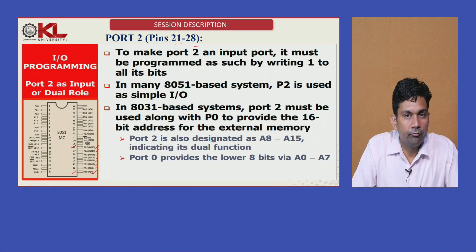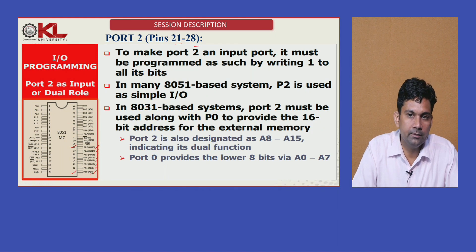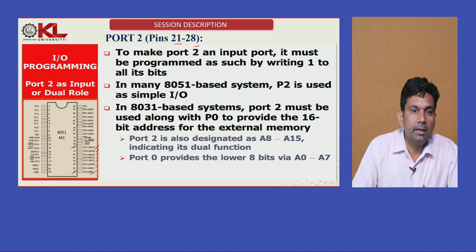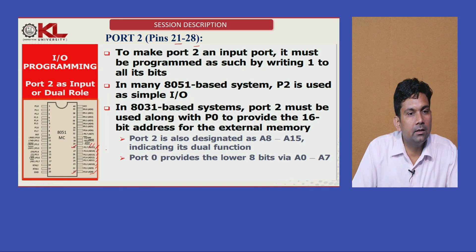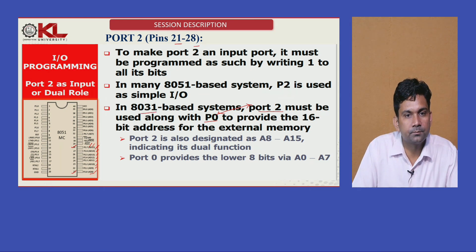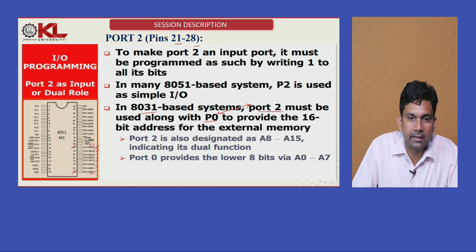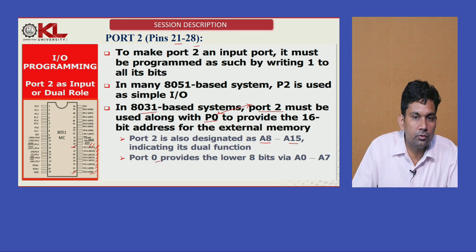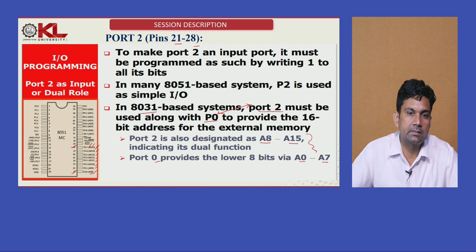If we want Port 2 to act as an input port, we must write 1 to all the pins. Port 2 also has a second function for address and data transfer. If we want to transfer 16-bit data, we combine Port 0 and Port 2 — Port 2 is designated as A8 to A15, and Port 0 is for A0 to A7, allowing 16-bit data transfer in 8031-based systems.